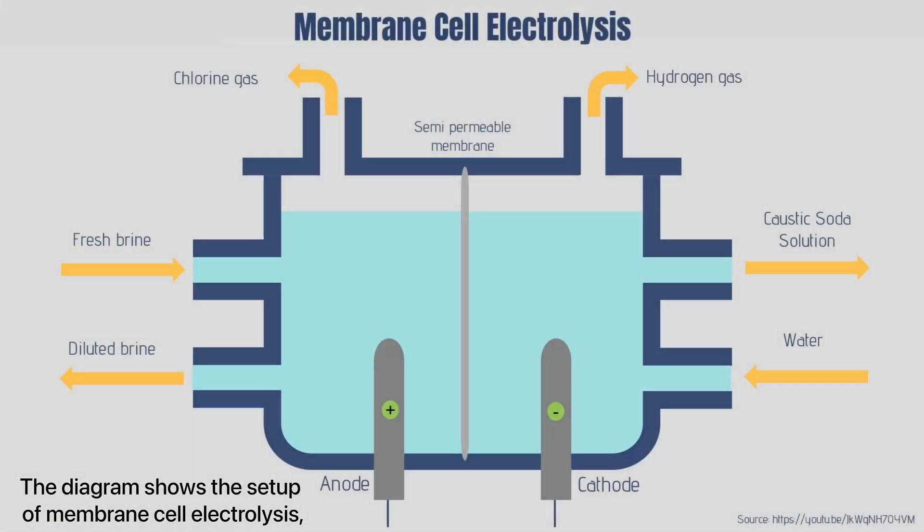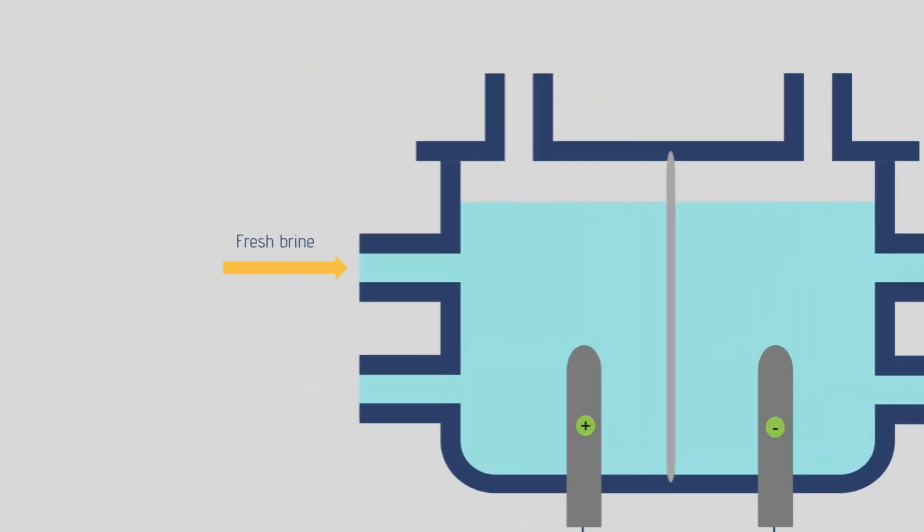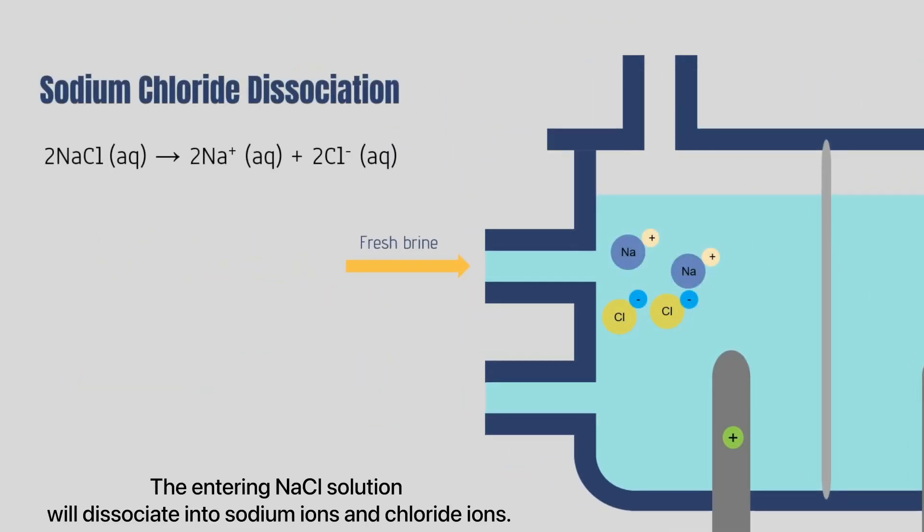The diagram shows the setup of membrane cell electrolysis, which is one of the methods used in this process. The entering NaCl solution will dissociate into sodium ions and chloride ions.